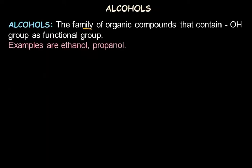Alcohols are the family of organic compounds which have OH as the functional group — examples include ethanol and propanol. Any compound which is an alcohol will have some carbon chain, represented in general as R, and then the OH group — that is oxygen and hydrogen — covalently bonded to the carbon chain. Such organic compounds are called alcohols.